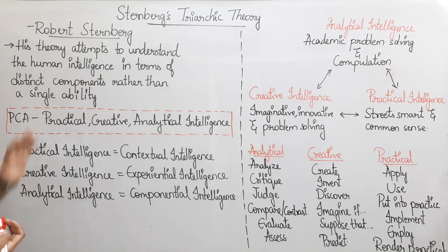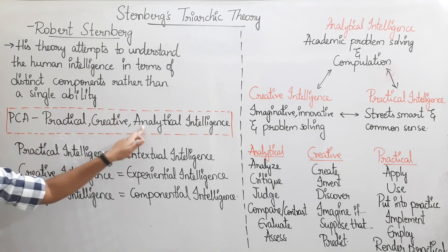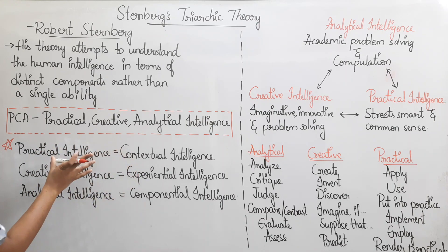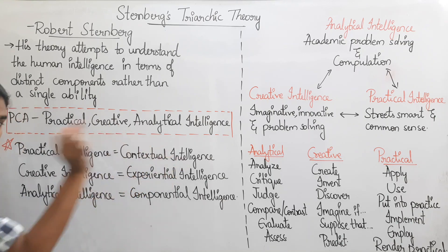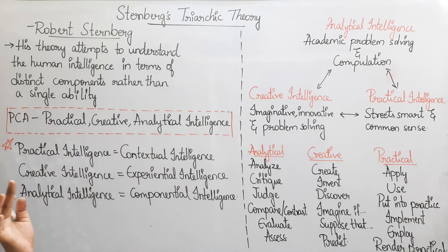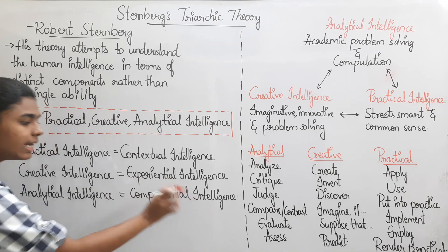Sternberg's Triarchic Theory is represented as PCA: Practical, Creative, and Analytical intelligences. In this theory, Practical intelligence is called Contextual intelligence, Creative intelligence is called Experiential intelligence — not Experimental, but Experiential — and Analytical intelligence is called Componential intelligence.